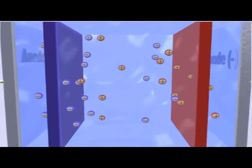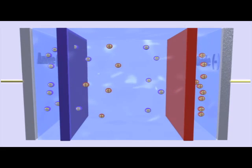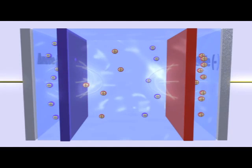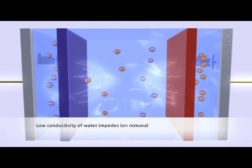This configuration of membranes and electrodes forms the framework of a CEDI module. This process is limited, however, by the slow speed at which ions move through water. In effect, the low conductivity of water impedes ion removal.